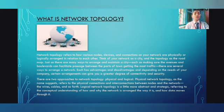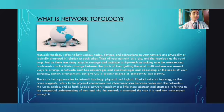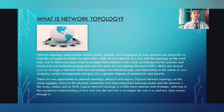There are two approaches to network topology: physical and logical. Physical network topology, as the name suggests, refers to the physical connections and interconnections between the nodes in the network — the wires, cables and so forth. Logical network topology is more abstract and strategic, referring to the conceptual understanding of how and why the network is arranged the way it is and how data moves through it.